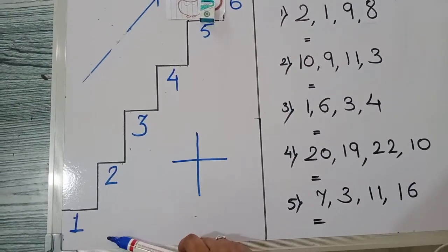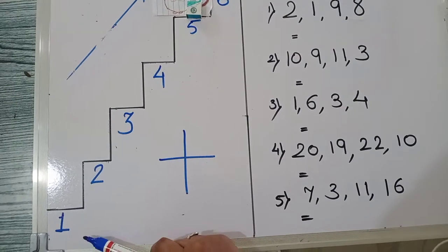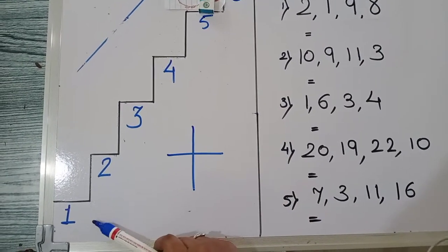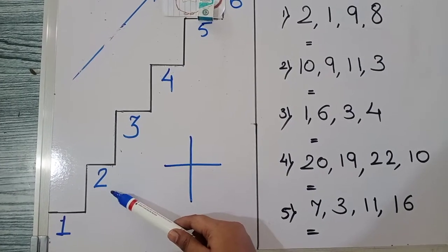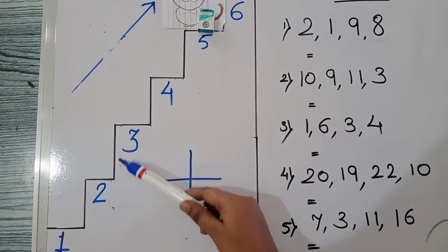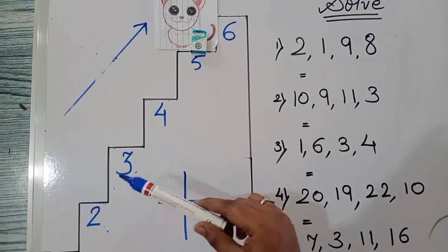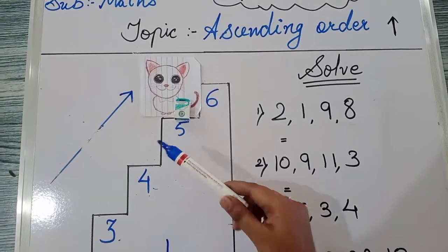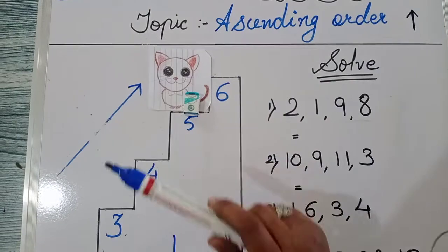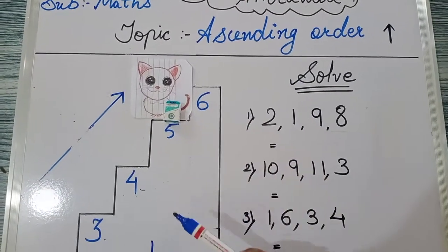Ascending order me numbers plus ho te hai. Add ho te hai. Suppose, 1 mein ham jab 1 or plus kare te hai, it becomes 2. When we add 1 again into that, it becomes 3. 3 mein jab hum 1 plus kare te hai, it becomes 4. 4 mein jab hum aur 1 plus kare te, it becomes 5. 5 mein jab hum 1 plus kare te, it becomes 6.